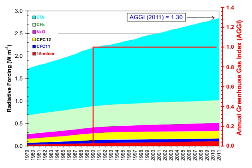Water vapor accounts for the largest percentage of the greenhouse effect — between 36% and 66% for clear sky conditions, and between 66% and 85% when including clouds. Water vapor concentrations fluctuate regionally, but human activity does not directly affect water vapor concentrations except at local scales, such as near irrigated fields. Indirectly, human activity that increases global temperatures will increase water vapor concentrations, a process known as water vapor feedback.